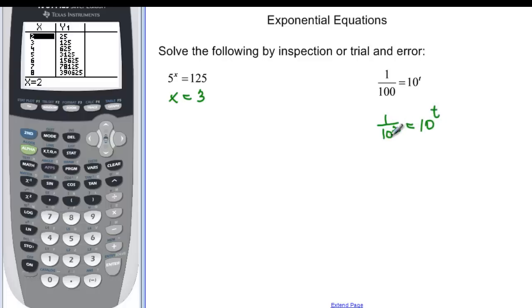Well, if I have 1 over 10 squared, that's really 10 to the negative 2. And that's the same thing as 10 to the t. So that must tell us that t is equal to negative 2.